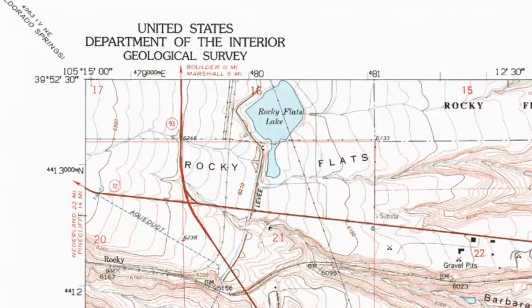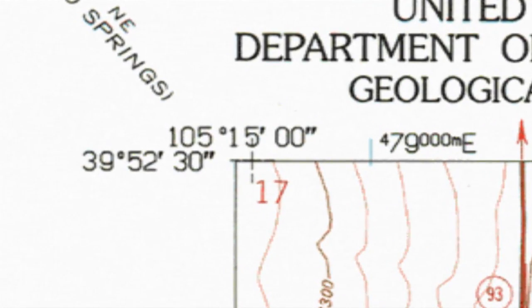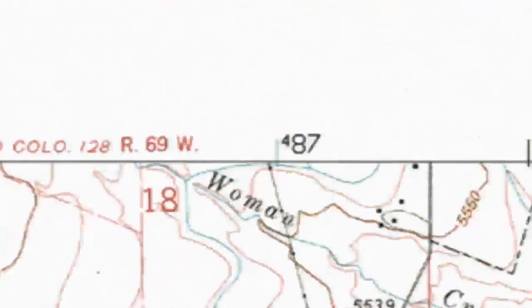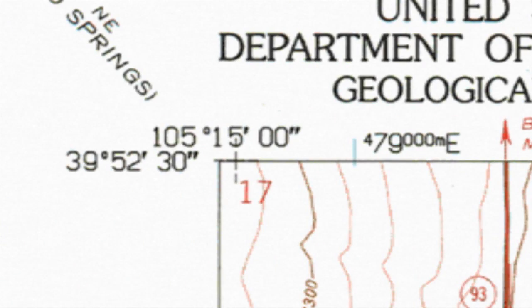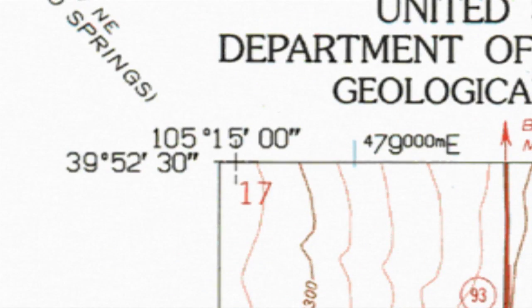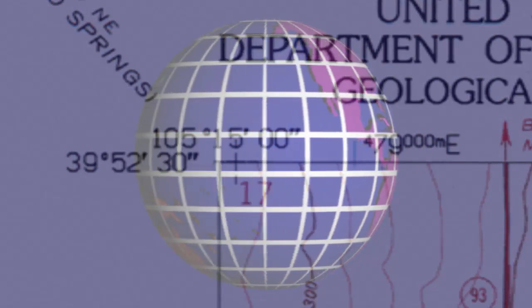Now look at the northwest corner of our map and note the numbers written there. Low on the left we have 39 degrees, 52 minutes — a single tick mark representing minutes of arc — and 30 seconds, with two tick marks. Above that we see 105 degrees, 15 minutes, and zero seconds. The 39-degree number lines up with the upper horizontal border, which is a latitude line running east to west, and the 105-degree number is over the left vertical border, which is a longitude line running north to south.